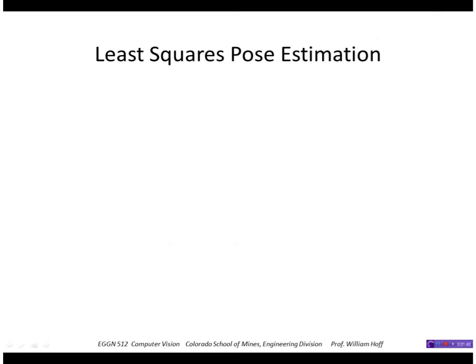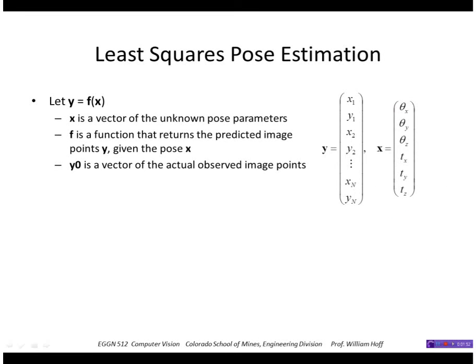We'll set this up as a least squares problem with a vector equation y equals f of x, where x is our unknown pose parameters. Here we're using the x, y, z angles and the tx, ty, tz translation. f is a function that returns the predicted image points given a hypothesized pose x. We'll put those image points into a column vector—each pair of points goes x1, y1, x2, y2, etc. And of course, we start off with a vector of the actual observed image points. We're going to find x that minimizes the squared error between the predicted points and the actual measured points.